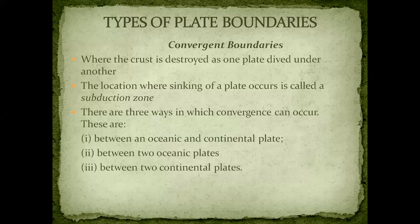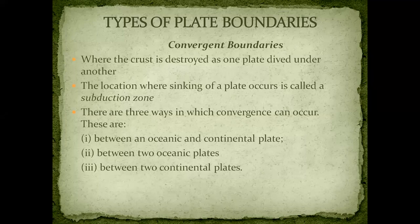Now let us talk about convergent boundaries. When we talk about convergent boundaries, the crust is destroyed as one plate dives under the other. This is totally different from divergent boundaries. This occurs when the plates move towards each other and they collide. When a continental plate meets an oceanic plate, the thinner, denser, and more flexible oceanic plate will generally sink beneath the thicker and comparatively more rigid continental plate. This process is called subduction.